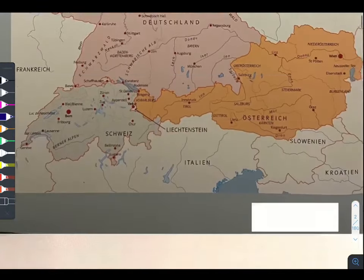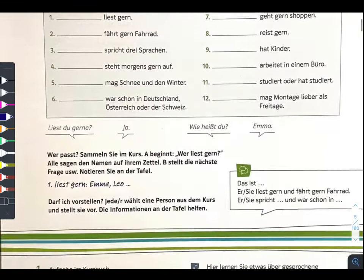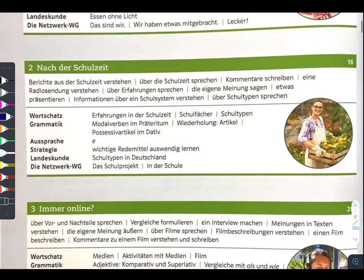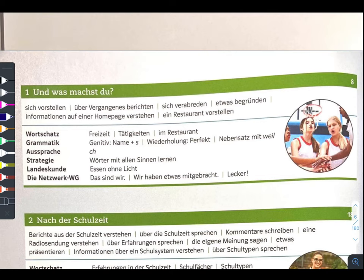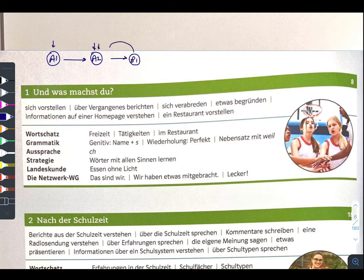Now in this Netzwerk Neu A2, whatever we did in Netzwerk A1, all of those are the advanced version which will come in A2, and the same process will continue in B1 also. For example, whatever we did in A1, that part will also come in A2, and whatever we did in A1 and A2 combined will come in B1.